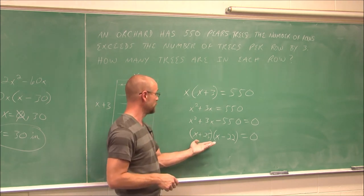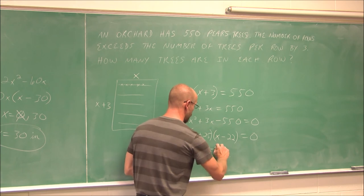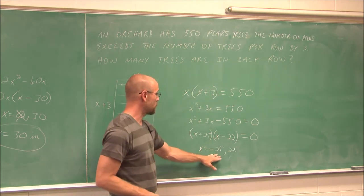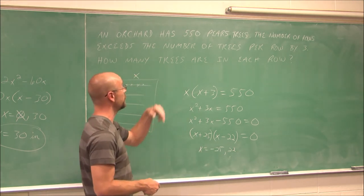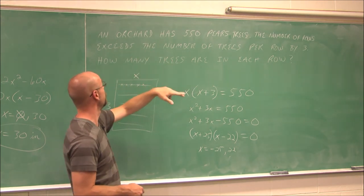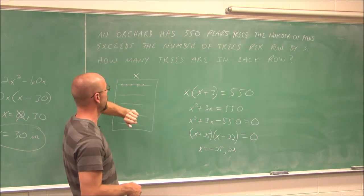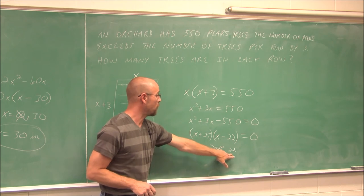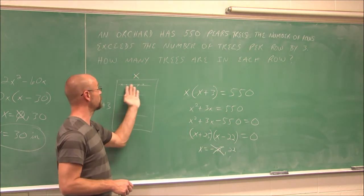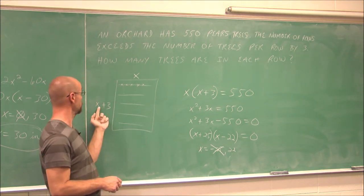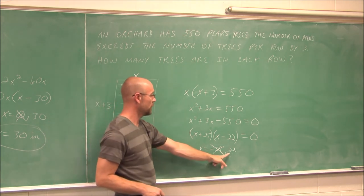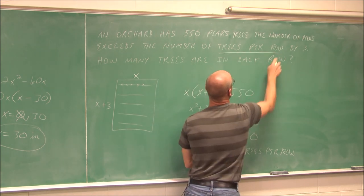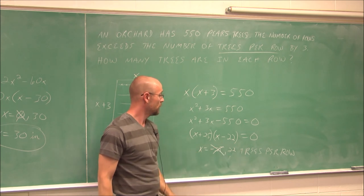Factoring x squared plus 3x minus 550 equals 0, we need factors of 550 with a difference of 3: those are 25 and 22. So (x + 25)(x − 22) = 0. By the zero product theorem, x equals negative 25 or x equals 22. Going back to the problem — we can't have a negative number of trees, so negative 25 is extraneous. With 22 trees per row and 22 plus 3 equals 25 rows, we have 22 times 25 equals 550 trees. The answer is 22 trees per row.